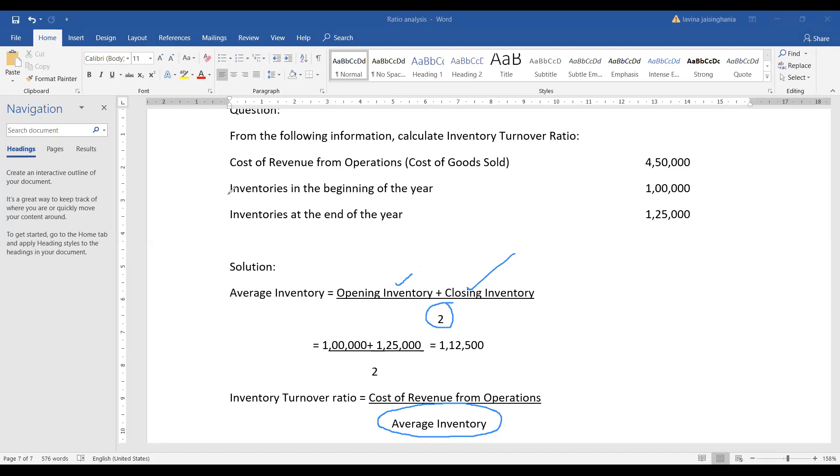Now you are given inventories in the beginning of year. In the beginning of year is 1 lakh, that is the opening inventory, plus inventories at the end of year, that is 1 lakh 25,000. So 1 lakh plus 1 lakh 25,000 divided by 2 will give you 1 lakh 12,500. So you got average inventory.